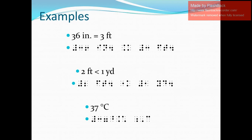For our next example, we have two feet is less than one yard. So in Nemeth, we would write that down using the abbreviation: numeric indicator, digit two, space, the abbreviation for feet — letters F and T — then period, space, the Nemeth equivalent for less than which is dot five for the first cell and dots one and three for the second cell, space, numeric indicator, digit one, space, the abbreviation for yard — letters Y and D — with the period.